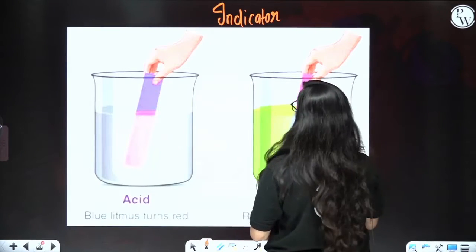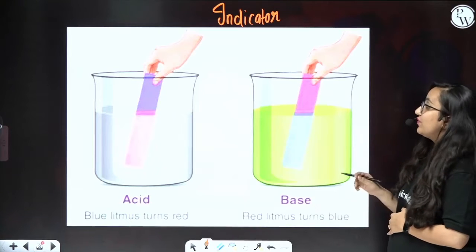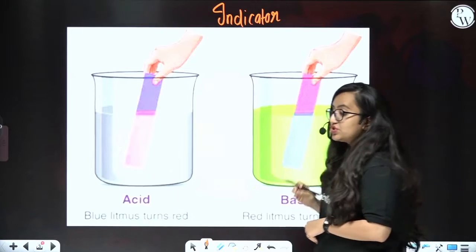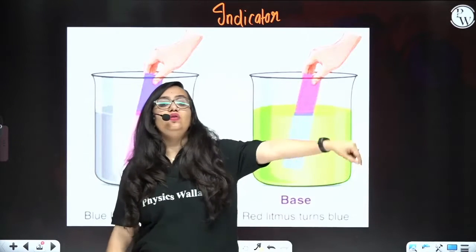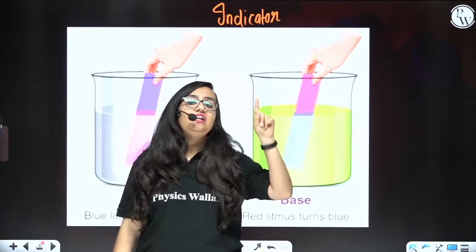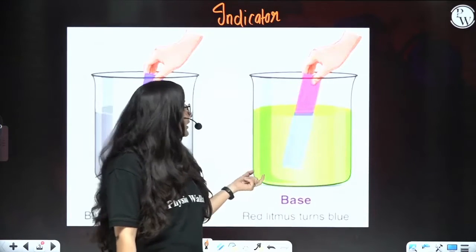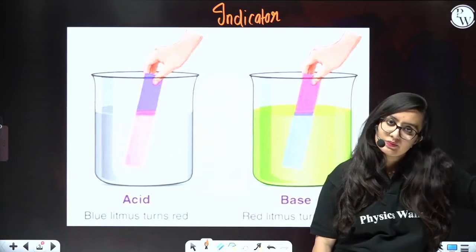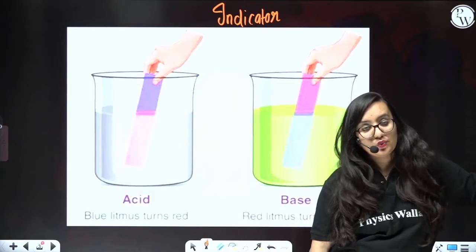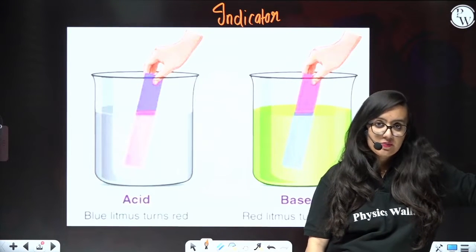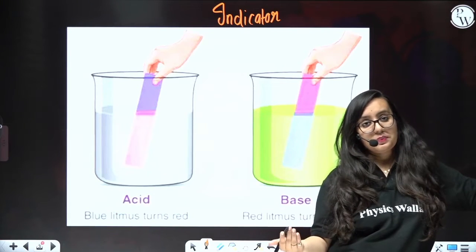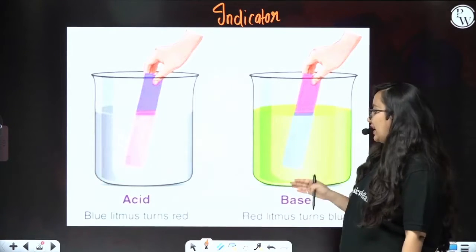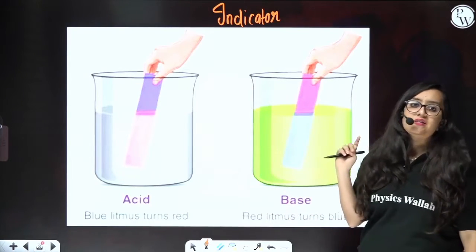When you talk about base — if you put red litmus paper into a solution and if it is turning blue, then that particular solution is base. That is how you can tell with the help of litmus paper: if the litmus paper is turning blue to red, it is acid, and if it is red to blue, then it is base.